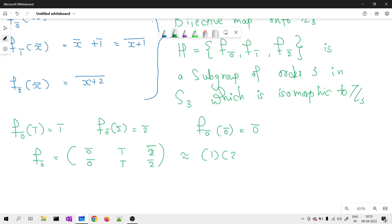So, it is like (1, 2, 3)(1, 2, 3). It is nothing but the identity element inside S3.